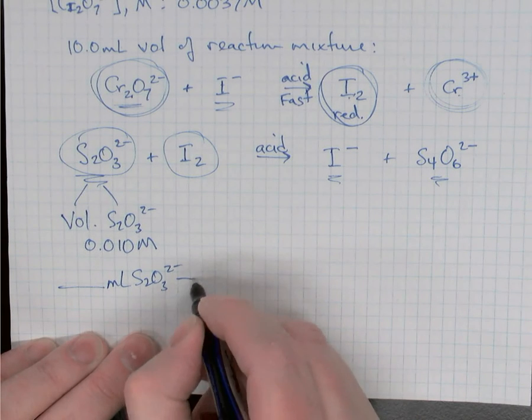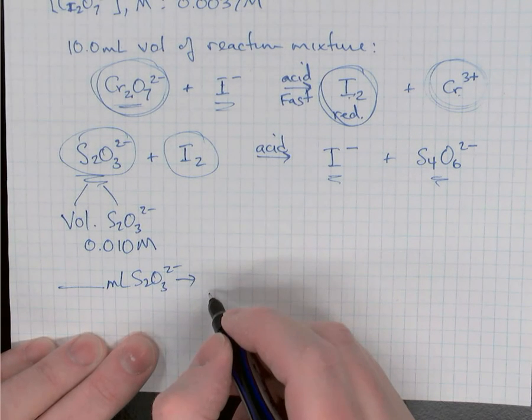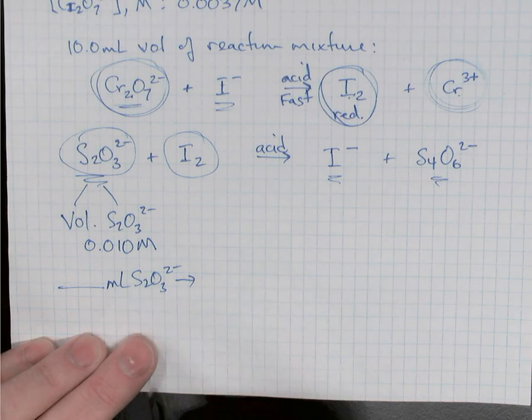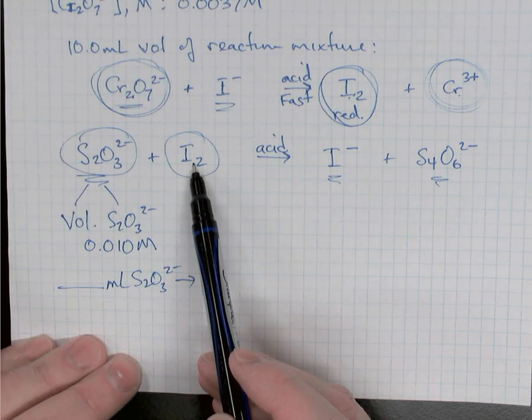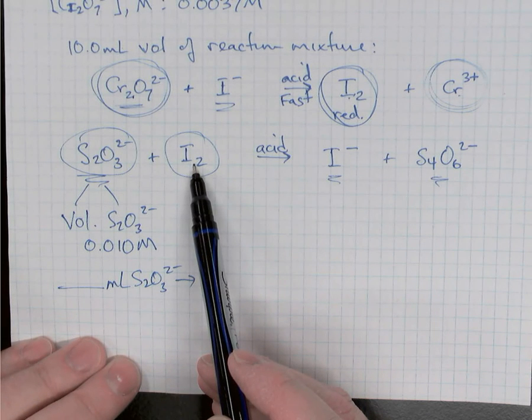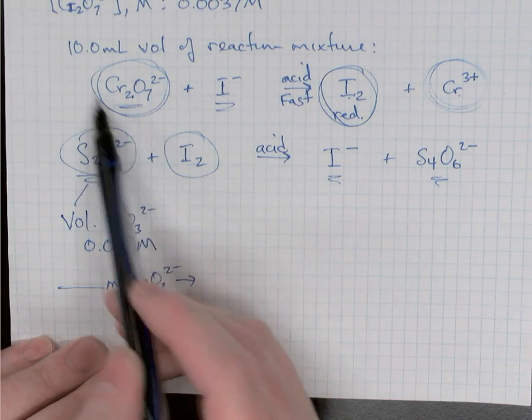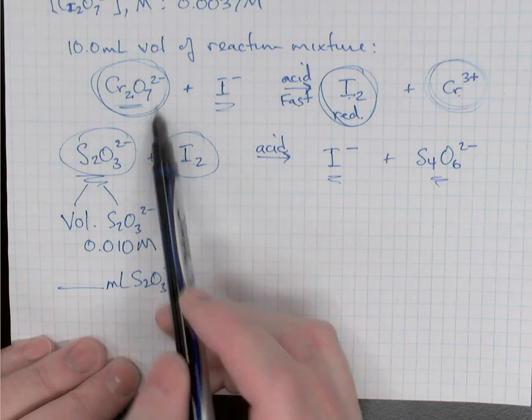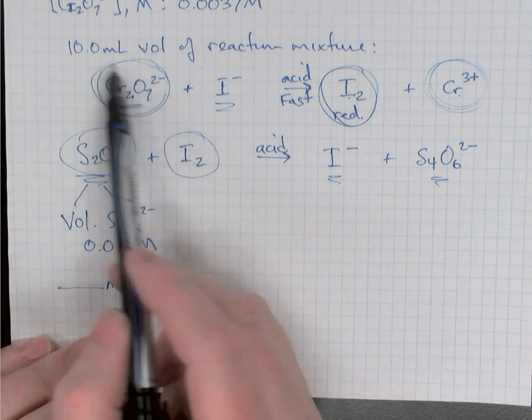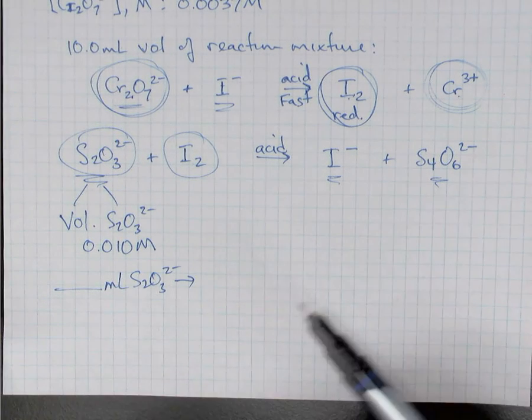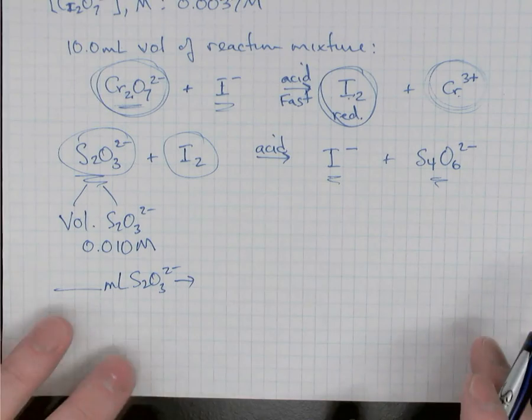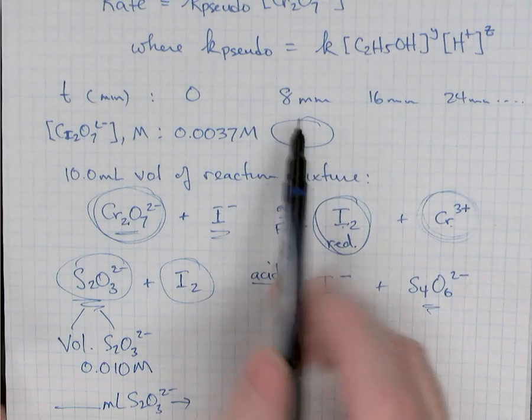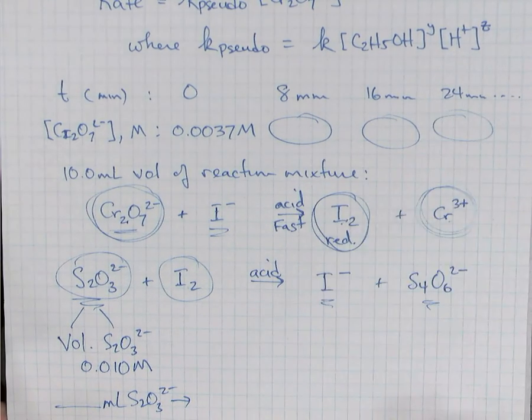So what we'll do is we'll convert that to liters. Then you'll convert from liters to moles because we know the molarity of the thiosulfate solution. Now that you know the moles of thiosulfate, you can find moles of iodine from your balanced equation. Moles of iodine, you can then say how many moles of dichromate were in there from the ratio in the first equation. Once you know the moles of dichromate, you know that there was a 10 milliliter volume. So if you divide the moles by 10 milliliters converted to liters, you'll know the molarity of dichromate at that time. So you'll know the molarity of dichromate at eight minutes, the molarity of dichromate at 16 minutes, at 24 minutes, etc.